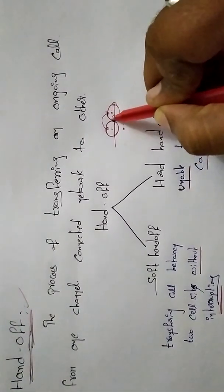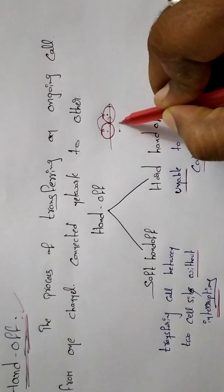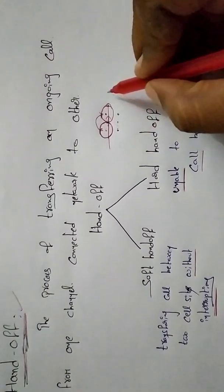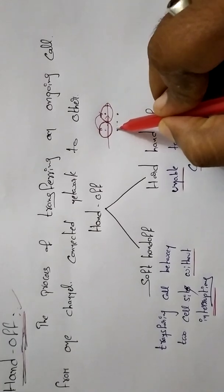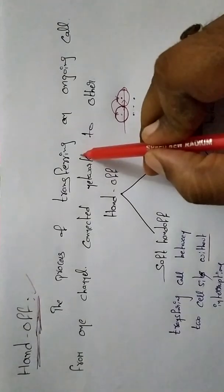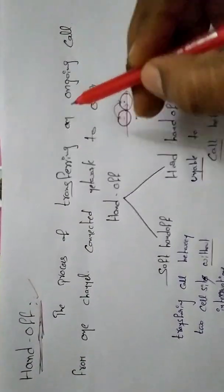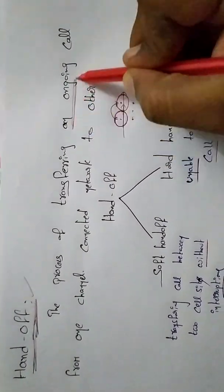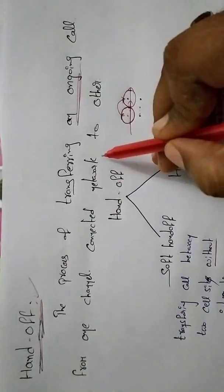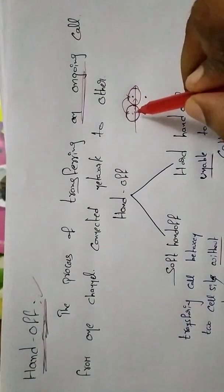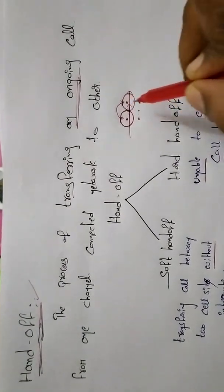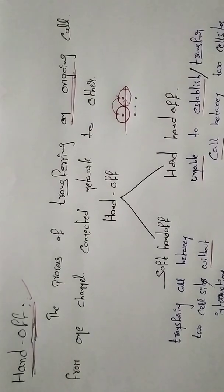At the same time, the signal from this tower will go from weak to strong. If you have a mobile device, it will have a strong signal. So the process of transferring an ongoing call from one channel-connected network to another — the ongoing call will be connected to the channel.